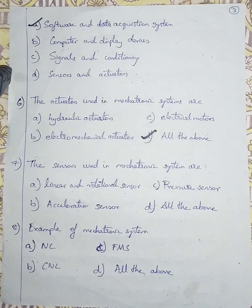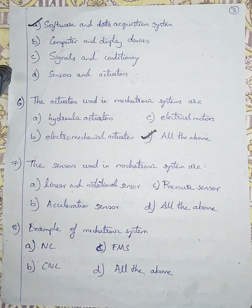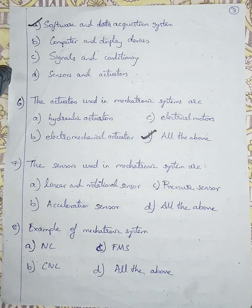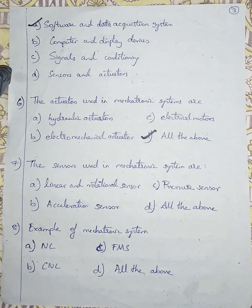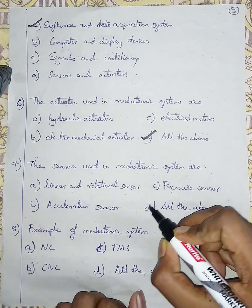Question number 7: The sensors used in mechatronic systems are. Option A is linear and rotational sensor. Option B is acceleration sensor. Option C is pressure sensor. Option D is all the above. Linear sensors sense linear displacement, rotational sensors sense angular displacement, pressure sensors sense change in pressure, and acceleration sensors sense change in acceleration. So the answer is option D, all the above.